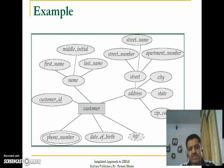Now let us consider this case of ER model. In this case, Customer is an Entity Set. Customer ID is the Key Attribute. Name is Composite, which can further be divided into First Name, Middle Name, and Last Name.